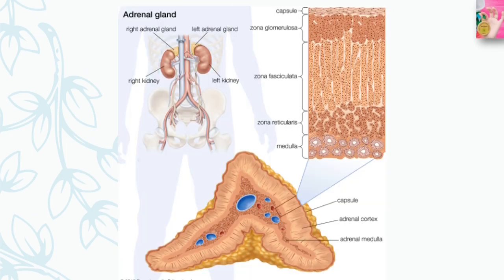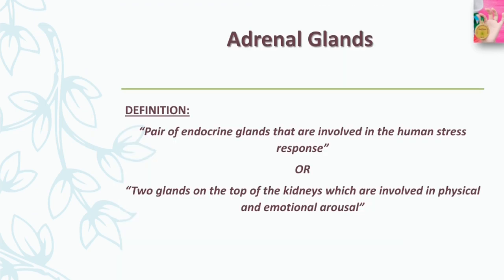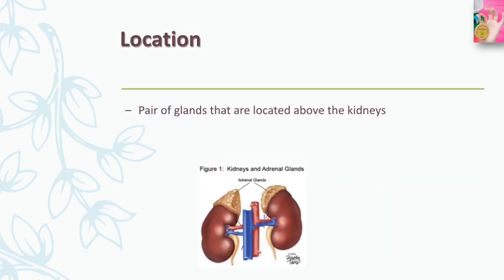In this video we'll start our lecture on the adrenal gland, which is another set of glands and is of particular interest to psychologists. I have included two definitions: the first one is a pair of endocrine glands that are involved in the human stress response, or you can say two glands on the kidney which are involved in physical and emotional arousal.